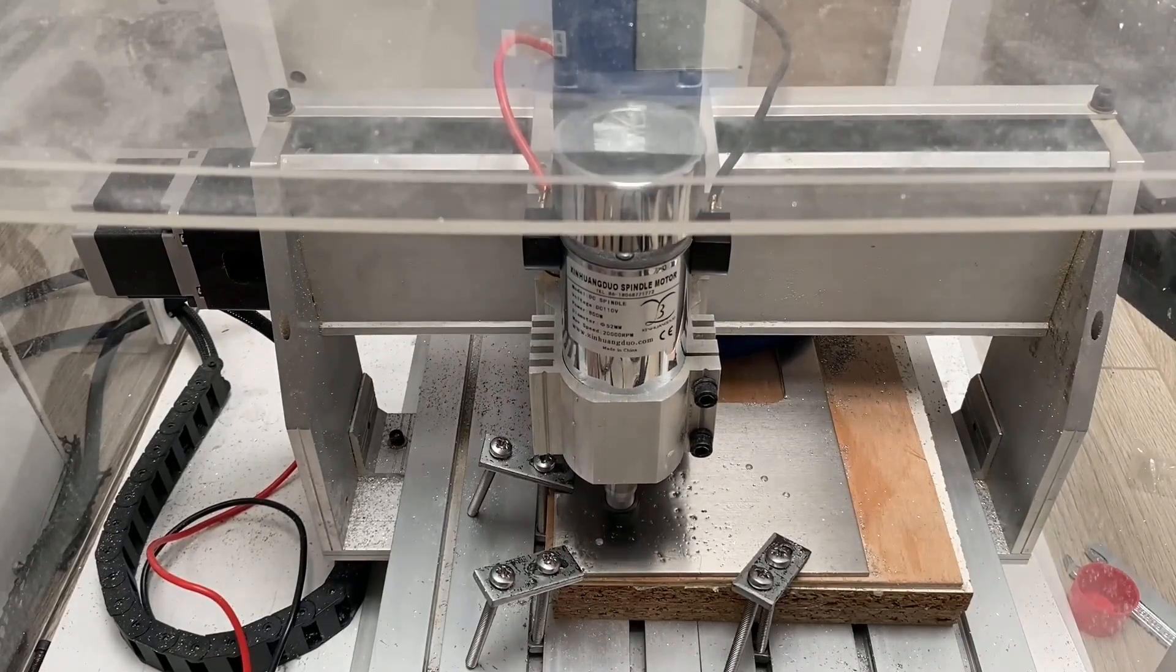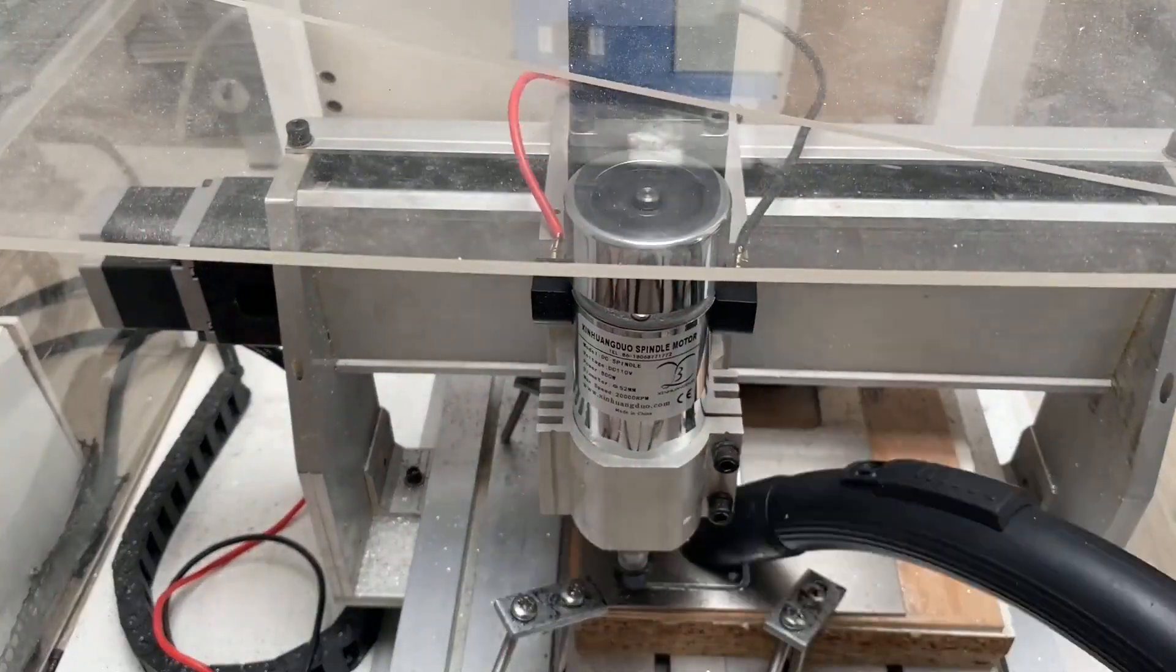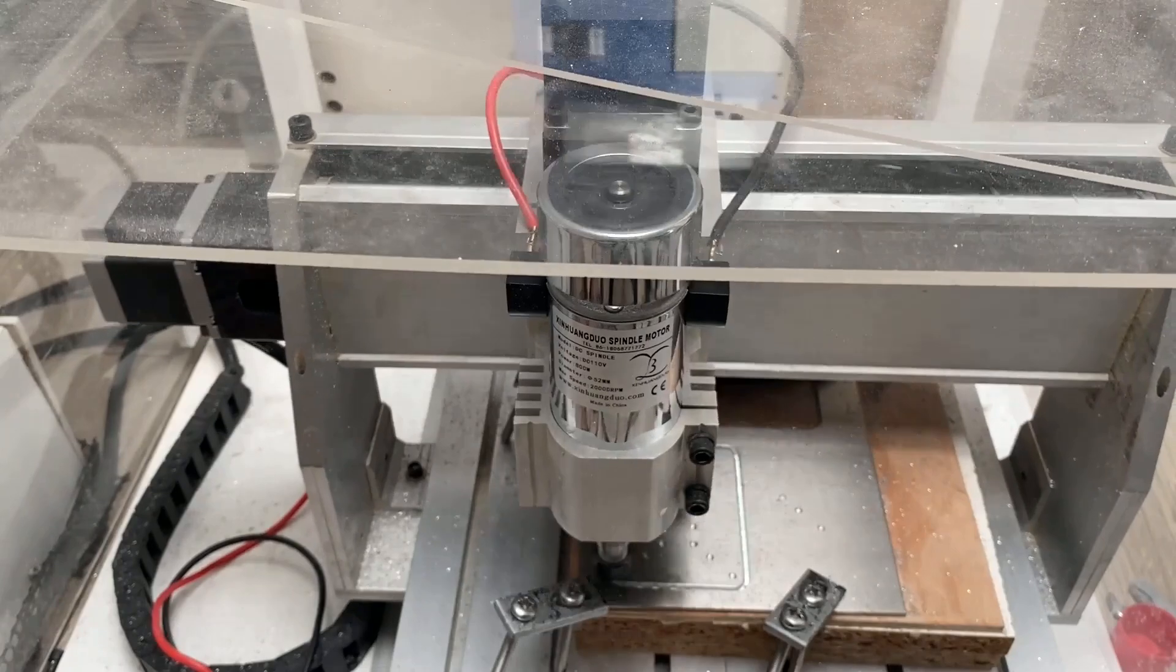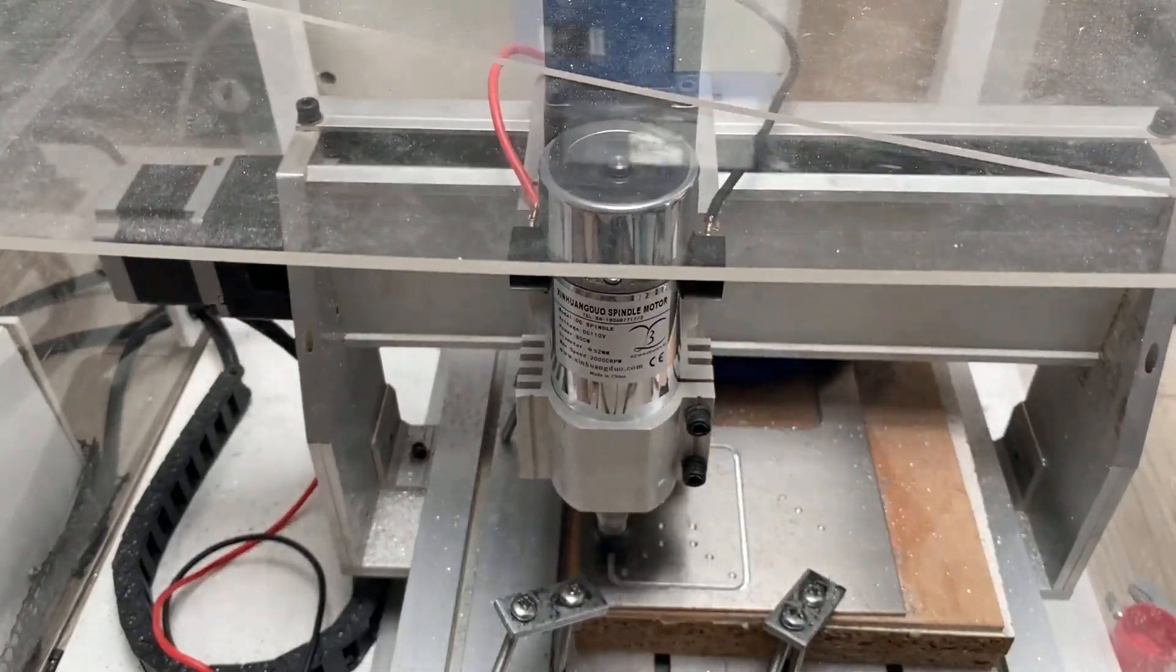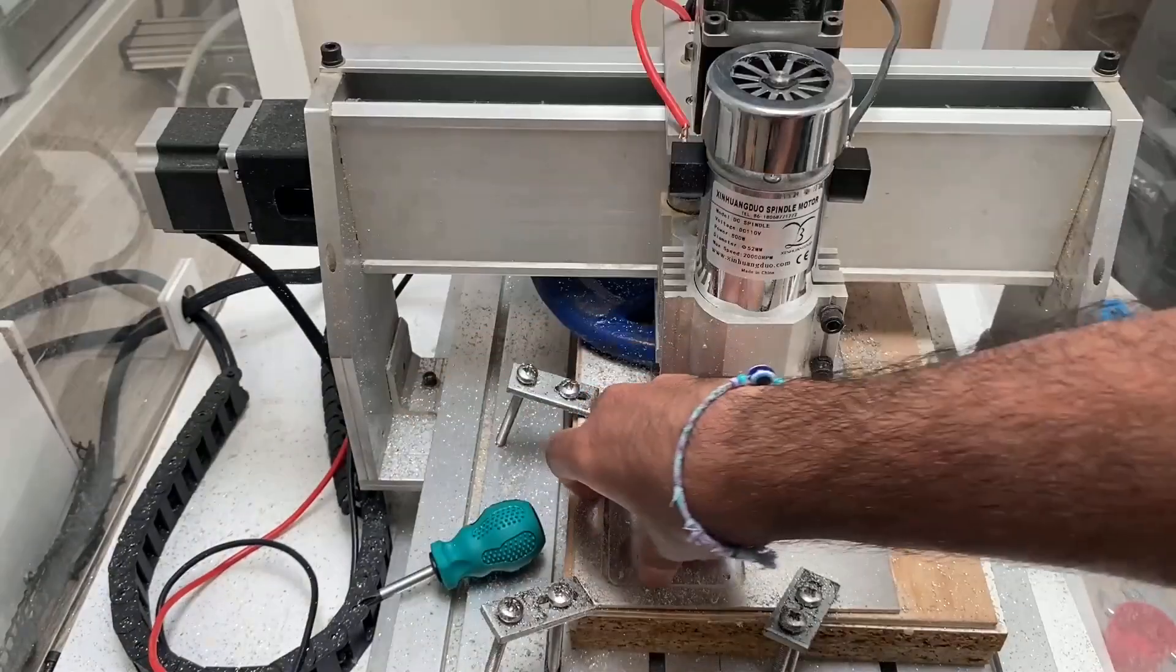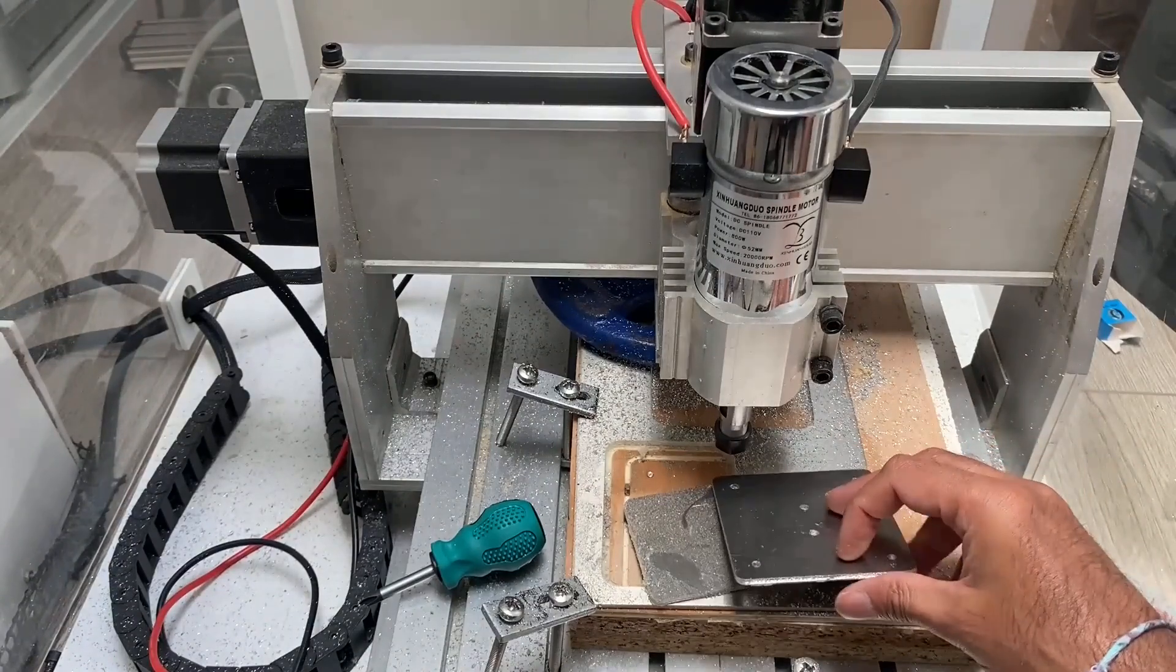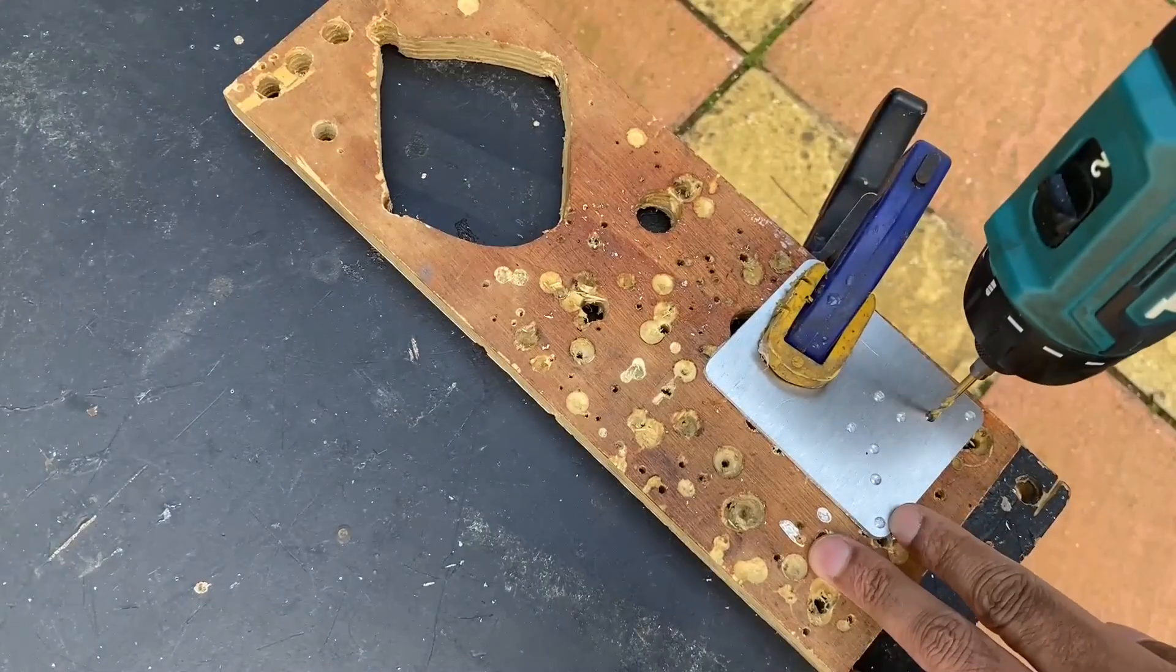I decided to peck the holes rather than drilling all the way through, not just because it saved time, but it was also easier on my end mills. These were the two completed Z-axis plates, and the next step was to drill out the holes that had been pecked earlier.